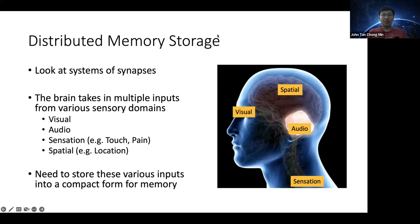Memory is not just isolated to one region. People think that the hippocampus stores everything — you consolidate memory in the hippocampus and then it goes to the cortex. But if you remove certain parts of the brain, like the hippocampus, you can still remember stuff. Memory can be stored in a distributed sense.